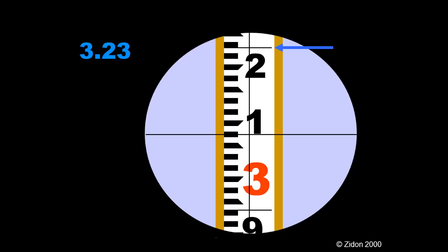The top stadia hair is above the red three, and also above the black two. This is three point two feet. We are at the bottom of the second black line above the two, and this is another three hundredths. So the top stadia hair is three point two three feet.